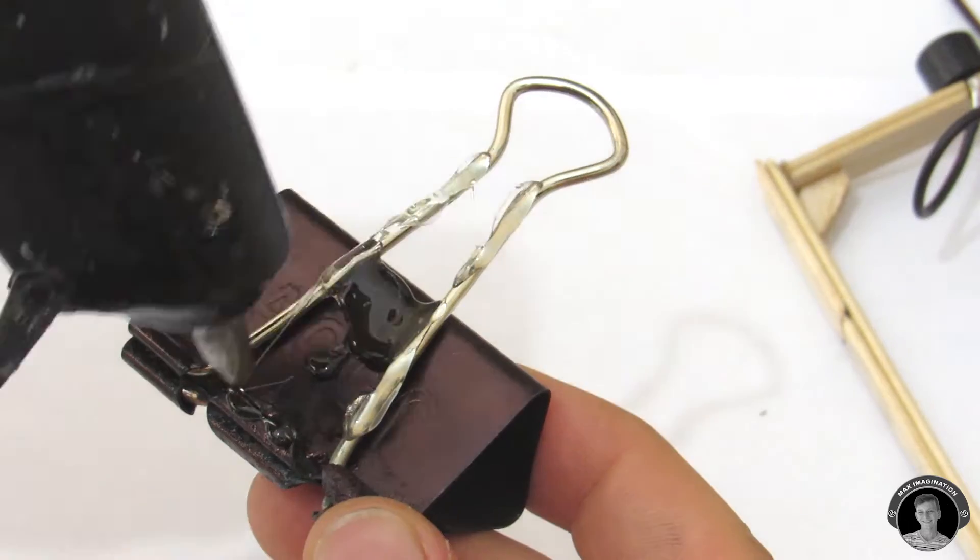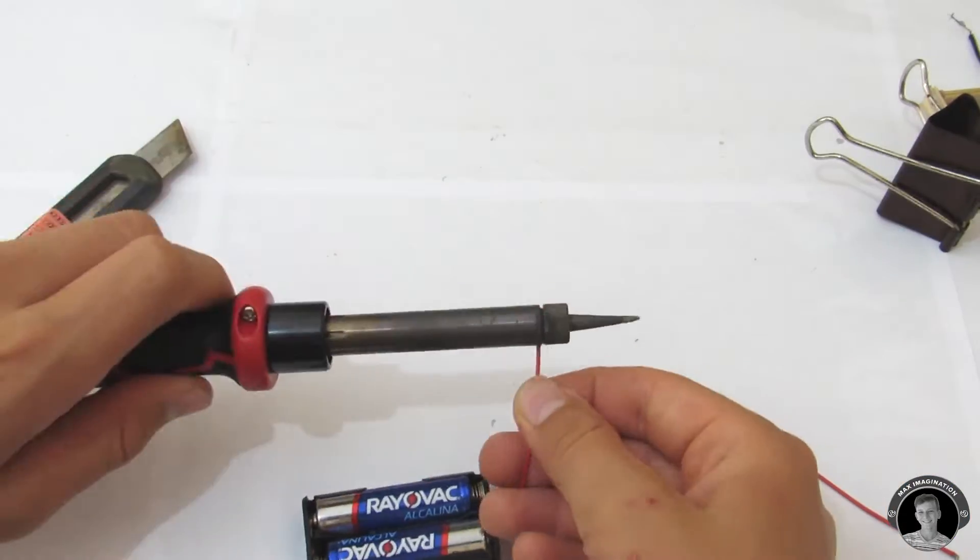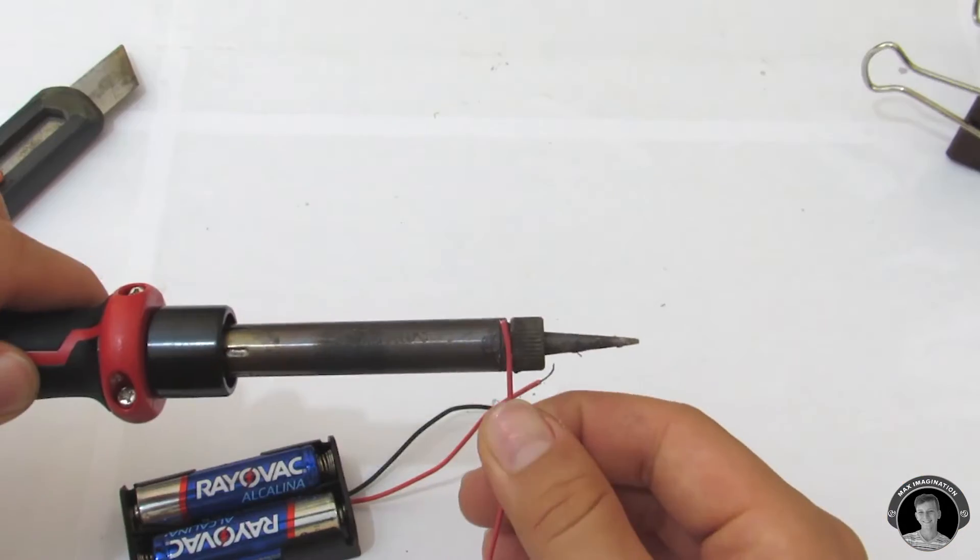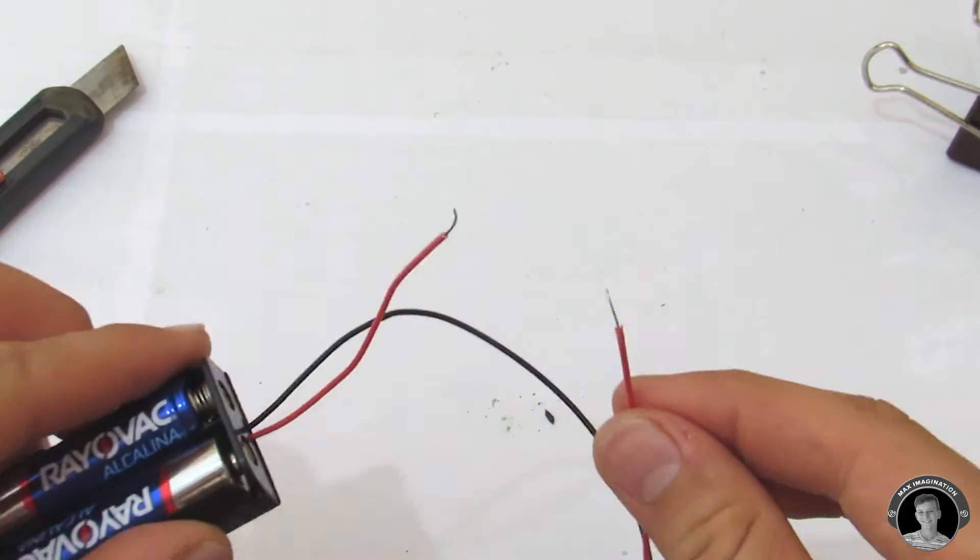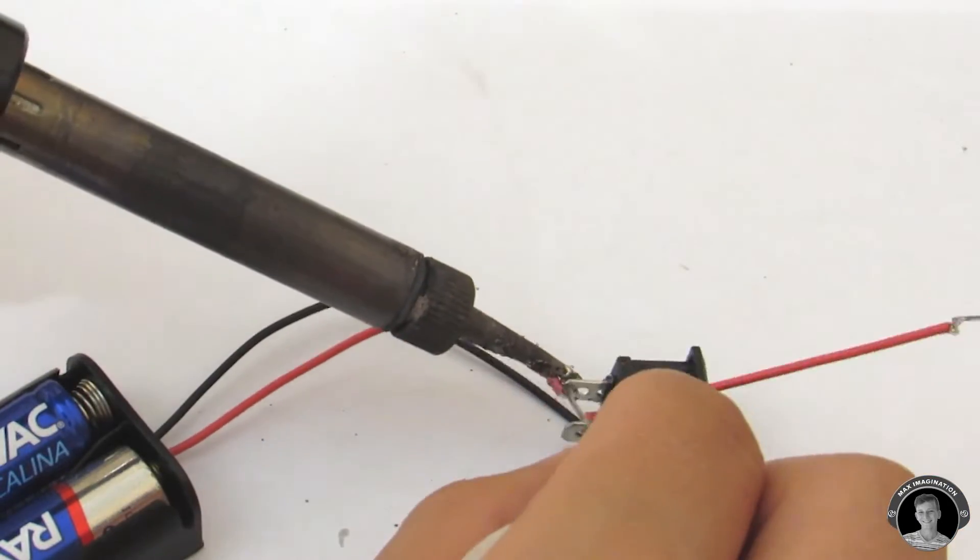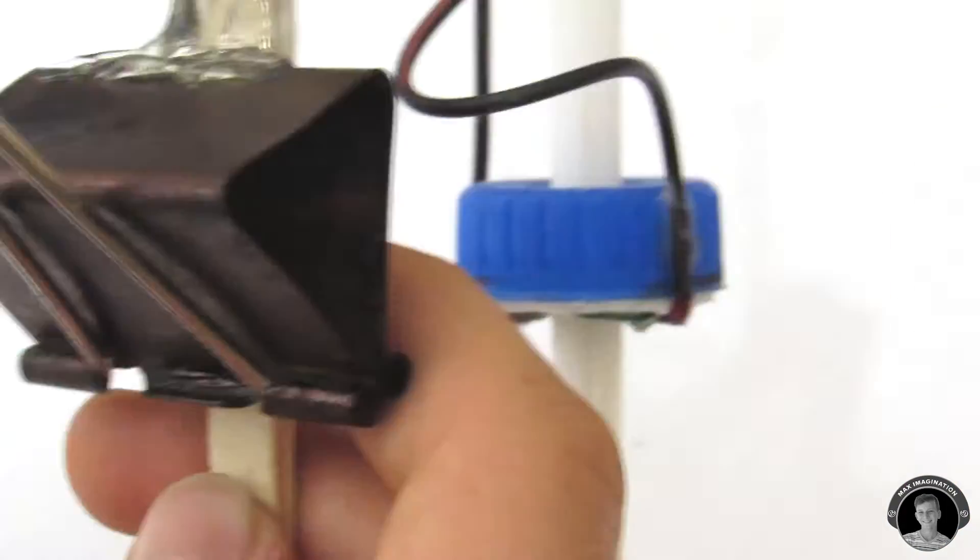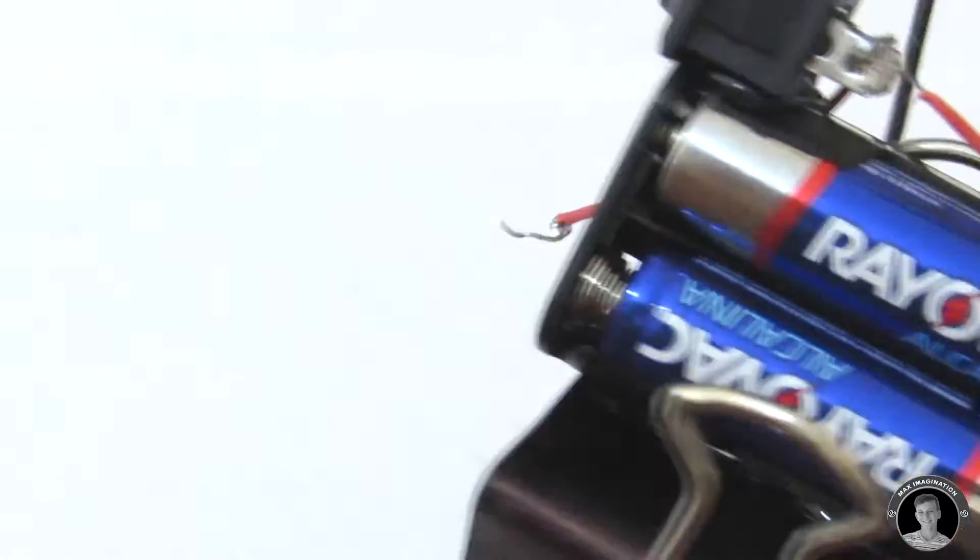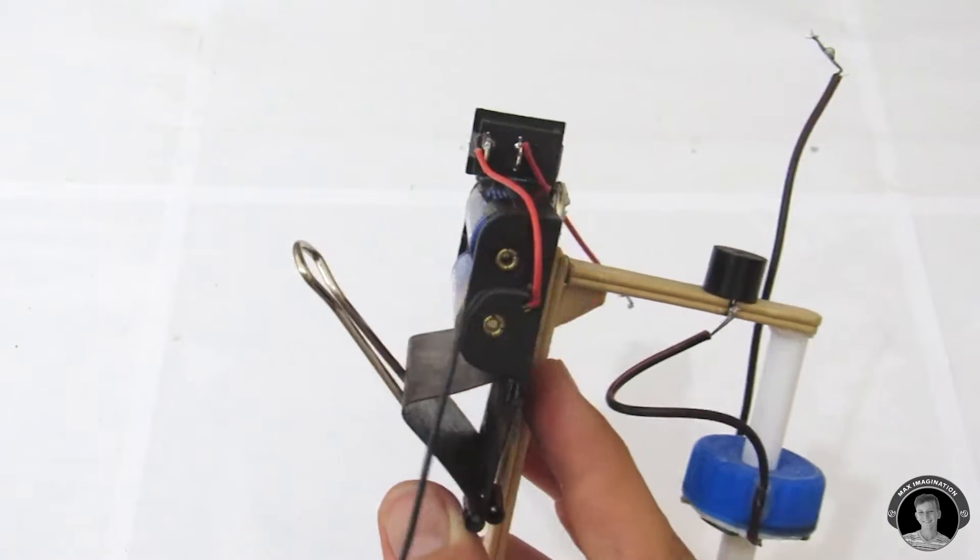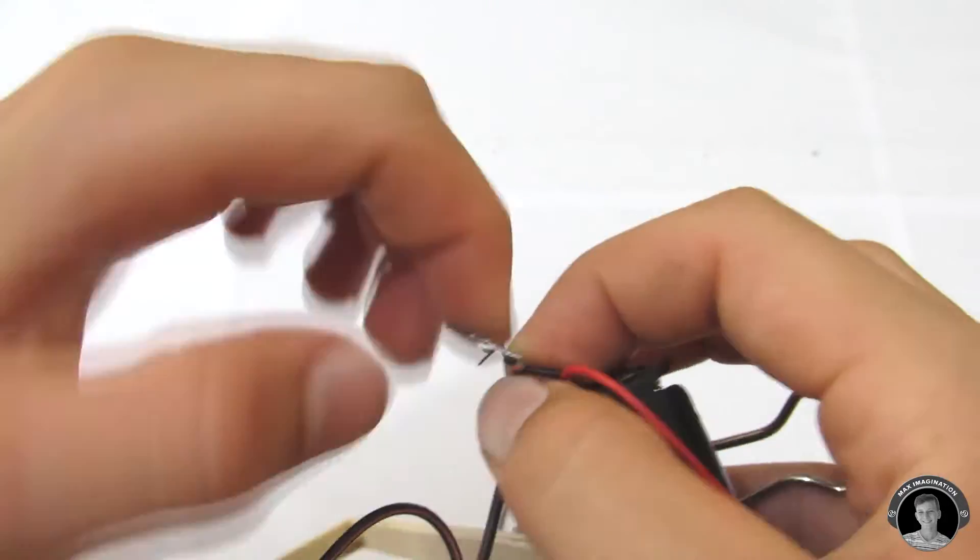Before we attach the rest of the components together, we'll need the clamp glued onto the back so that we can put the battery on. Connect the switch up to one of the wires of the battery and have another wire coming out the other end of the switch. Connect the negative battery wire to one of the wires coming from the bottle cap.